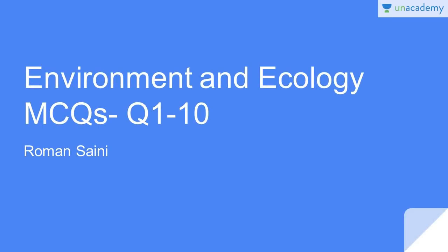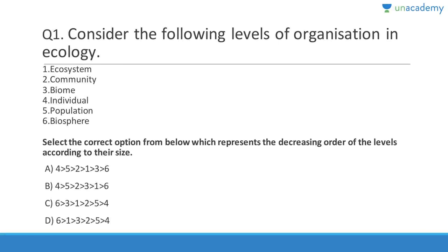Let us start our awesome course on environment and ecology. These are questions number one to ten; we will discuss the remaining 990 questions in subsequent lessons. Question one: Consider the following levels of organization in ecology and select the option which represents the decreasing order of the levels according to their size.